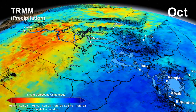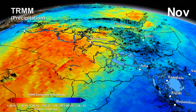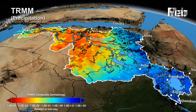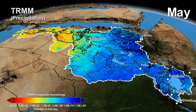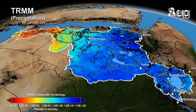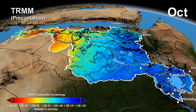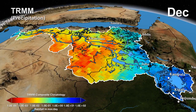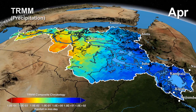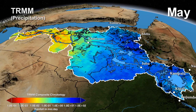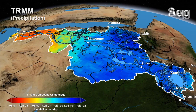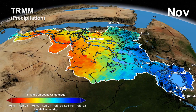Here we see the seasonal cycle of monthly precipitation in Africa, including the Nile Basin. The annual migration of the rain-laden intertropical convergence zone from the Nile equatorial lakes region around Lake Victoria, northward into Sudan and the highlands of Ethiopia, and back, is evident in the seasonal cycle of rainfall.